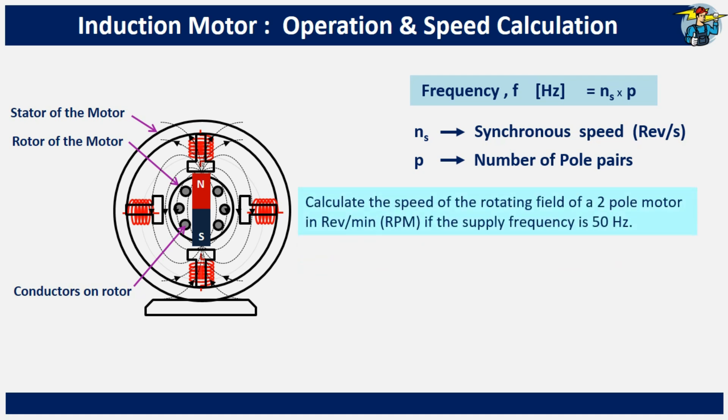In this example, it says to calculate the speed of the rotating field of a two-pole motor in revolutions per minute if the supply frequency is 50 hertz. From the formula, the speed of the rotating magnetic field is frequency divided by the number of pole pairs. Since a two-pole motor has only one pair of poles, you can divide 50 by one to get the speed.